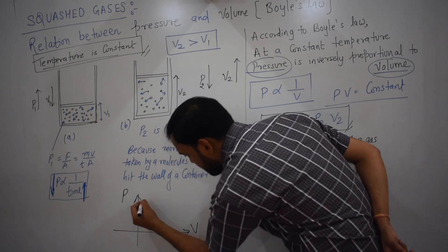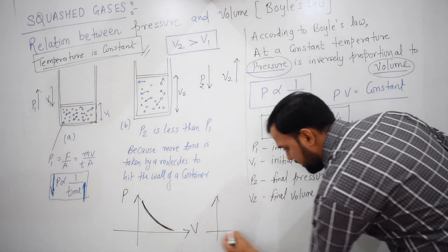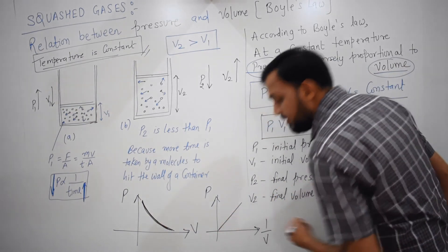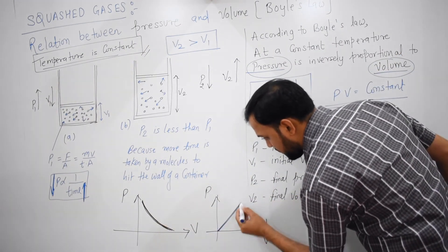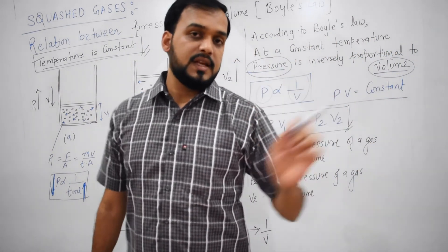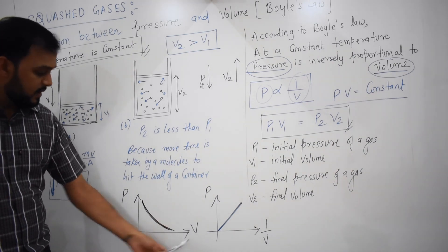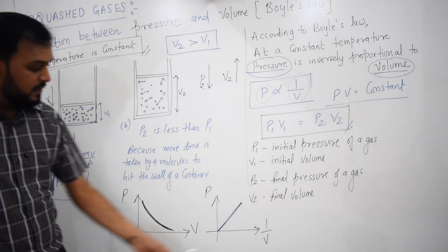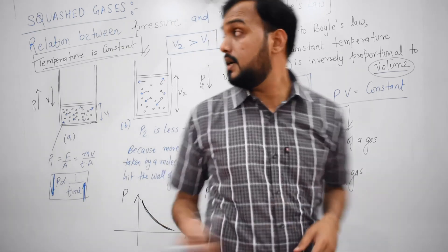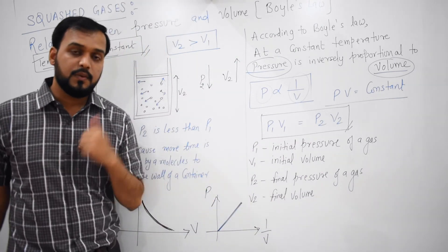When dealing with numericals, the question will give you initial pressure P1, initial volume V1, final pressure P2, and final volume V2. If you plot a graph between pressure and volume, the graph will be a curve — as volume increases, pressure in the container decreases. If you plot a graph between pressure and 1/V, in this case you get a linear graph, because P and 1/V have a direct relationship. So see carefully what the x-axis is mentioning: if it's volume then your graph goes as a curve, if it's 1/V then you have a straight-line graph.